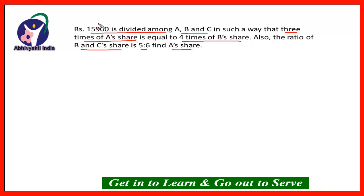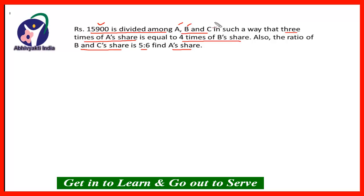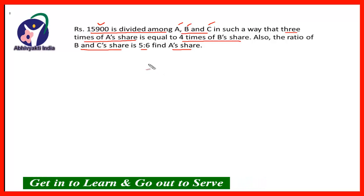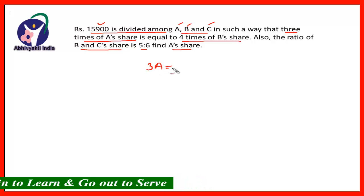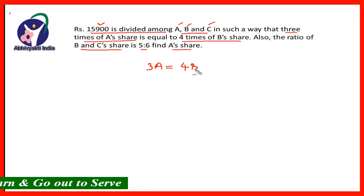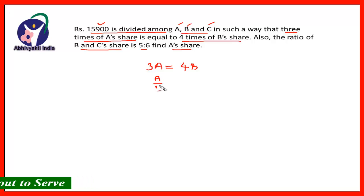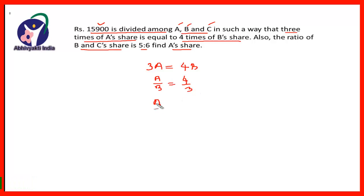Here, Rs.15,900 is divided among A, B and C such that 3 times of A is equal to 4 times of B's share. And so, A upon B is equal to 4 upon 3, which means A is to B is equal to 4 is to 3.